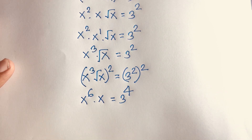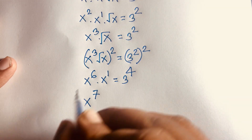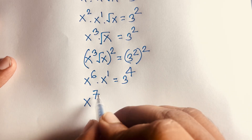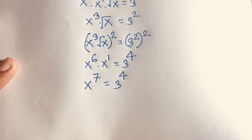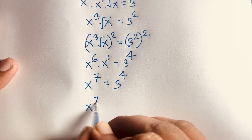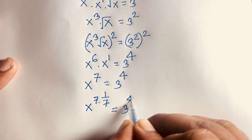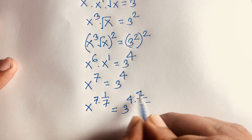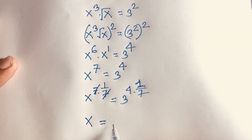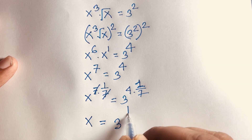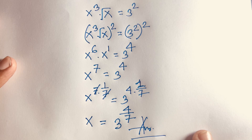Using exponential rules, 2 times 2 gives 4, and 6 plus 1 gives 7, so we have x to the power 7 equal to 3 to the power 4. Raising both sides to the power 1 over 7, the 7s cancel, and our final answer is x equals 3 to the power 4 over 7.